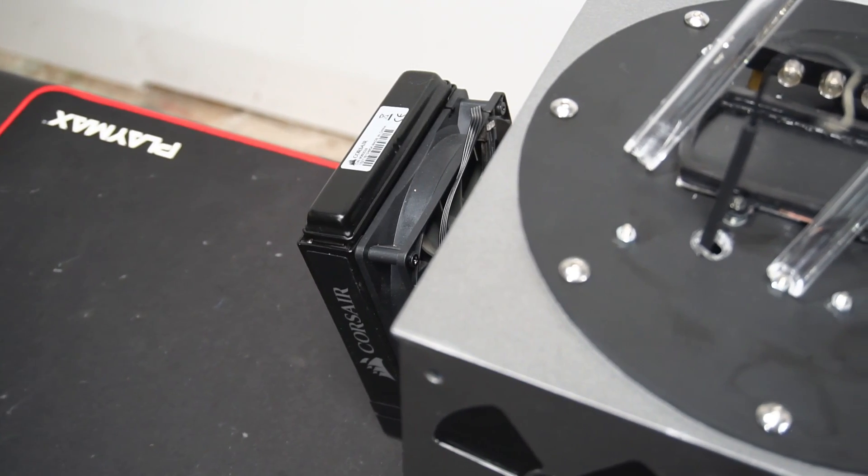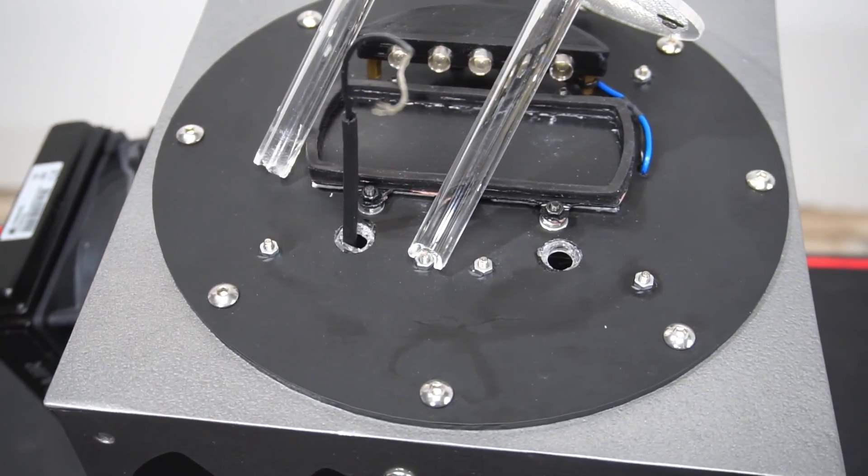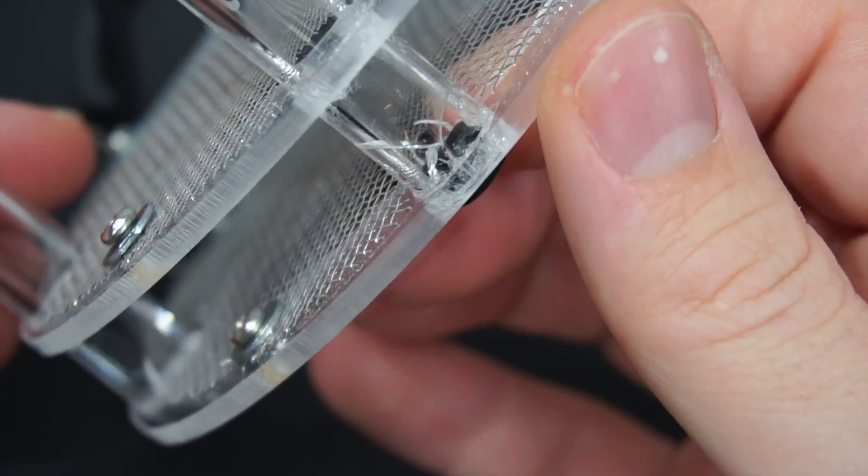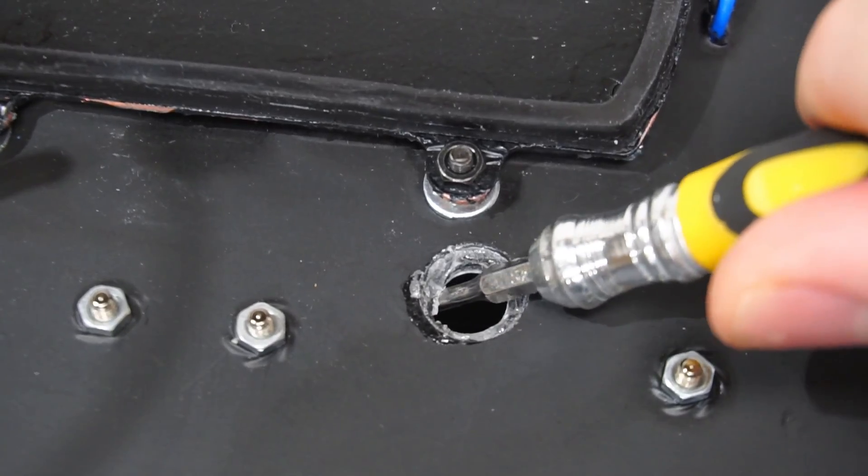The ISO alcohol had eaten the acrylic making it very brittle. Interestingly this only happened wherever there is a joint with acrylic cement. My assumption is the type of cement I used somehow allowed the alcohol to penetrate the acrylic and make it very brittle.